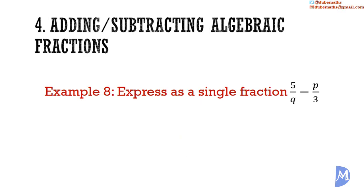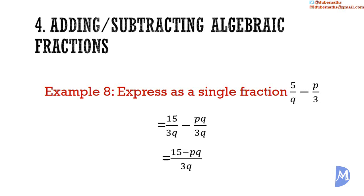Example 8. Express as a single fraction: 5 over q subtract p over 3. The LCM of q and 3 is 3q. We express both fractions over 3q. To get the first fraction over 3q, we multiply the denominator by 3, so we also multiply the numerator by 3: 3 multiplied by 5 is 15. For the second fraction, we multiply the denominator by q to get 3q, so we multiply the numerator by q as well, giving pq. Since both fractions are over the same denominator, we subtract the numerators. The result, (15 minus pq) over 3q, cannot be reduced further.